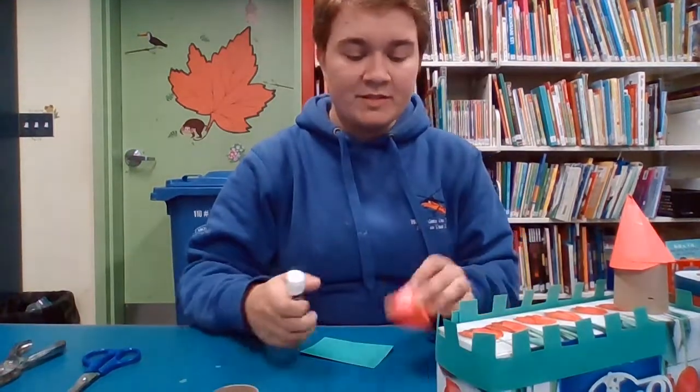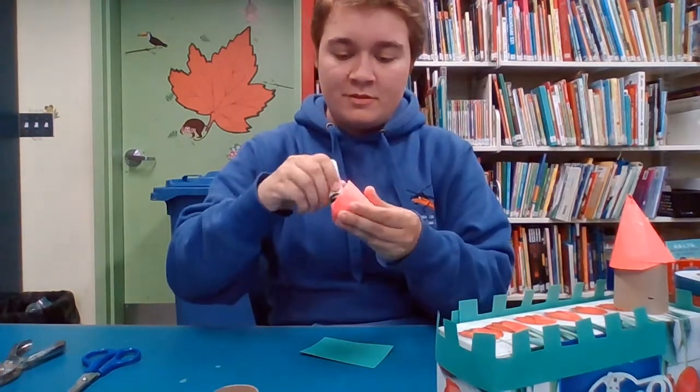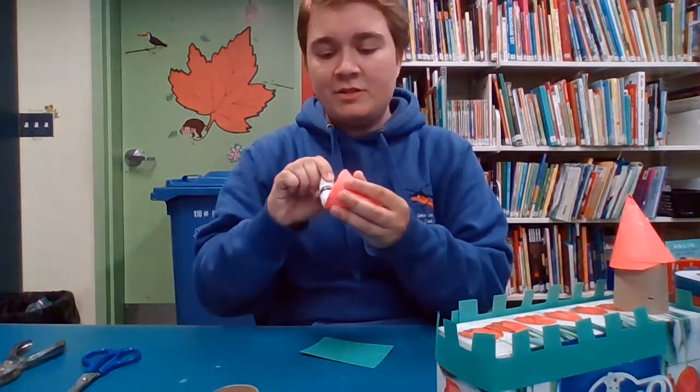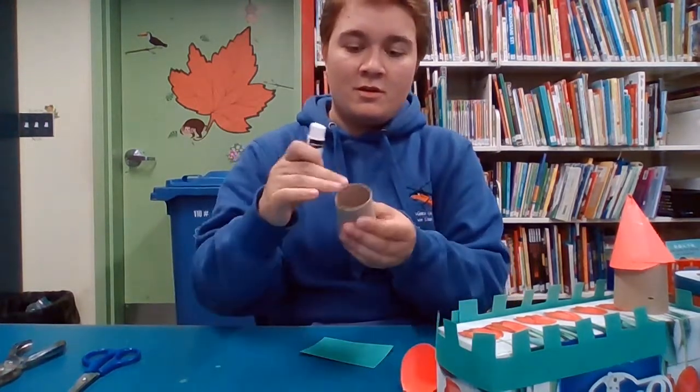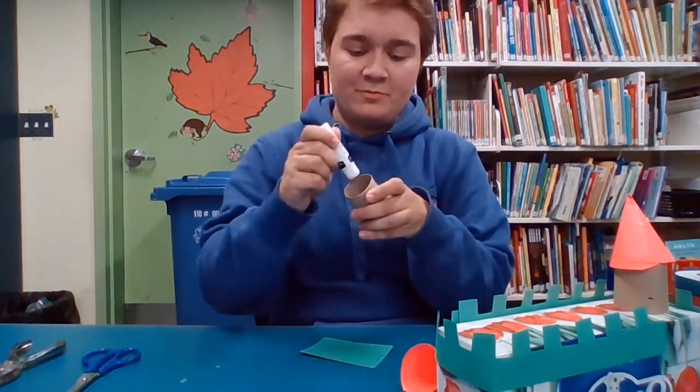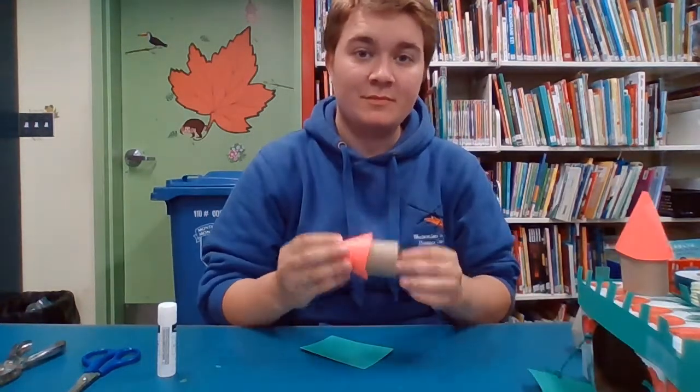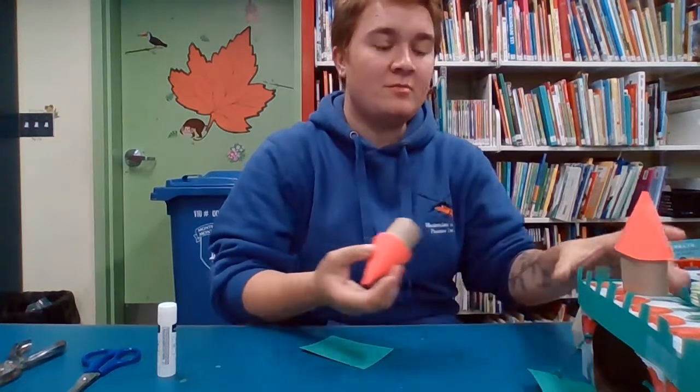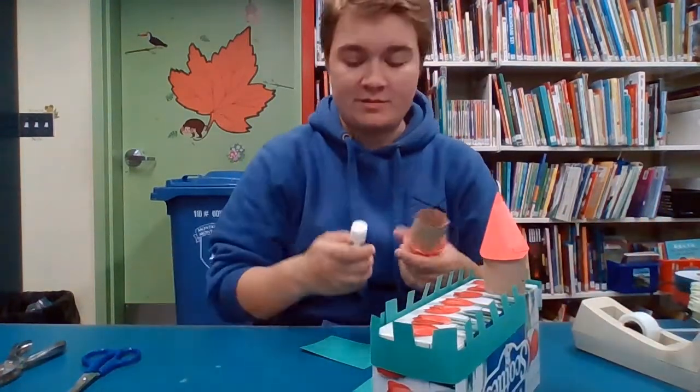Next we can attach the turrets, so we're gonna put the glue all inside of our cone around the edge, and we're gonna put glue on one side of the cardboard tube too. And then you glue them together, and you can do the same thing with the other side of the cardboard tube to glue it onto the castle.